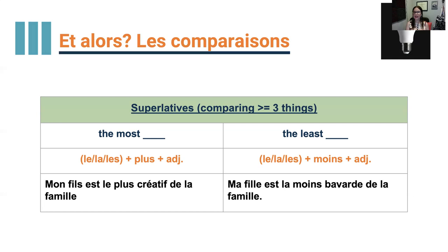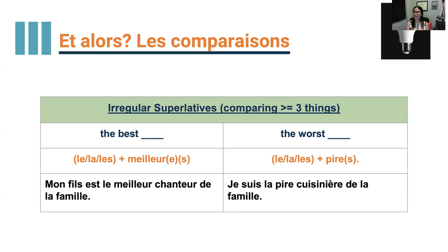Now we have irregular superlatives — the best and the worst. 'Le/la/les meilleur(e)(s)' — the best. 'Le/la/les pire(s)' — the worst. Same grammatical agreements in gender and number. Mon fils est le meilleur chanteur de la famille — he's the best singer of the family. Je suis la pire cuisinière de la famille — I'm the worst cook in the family.